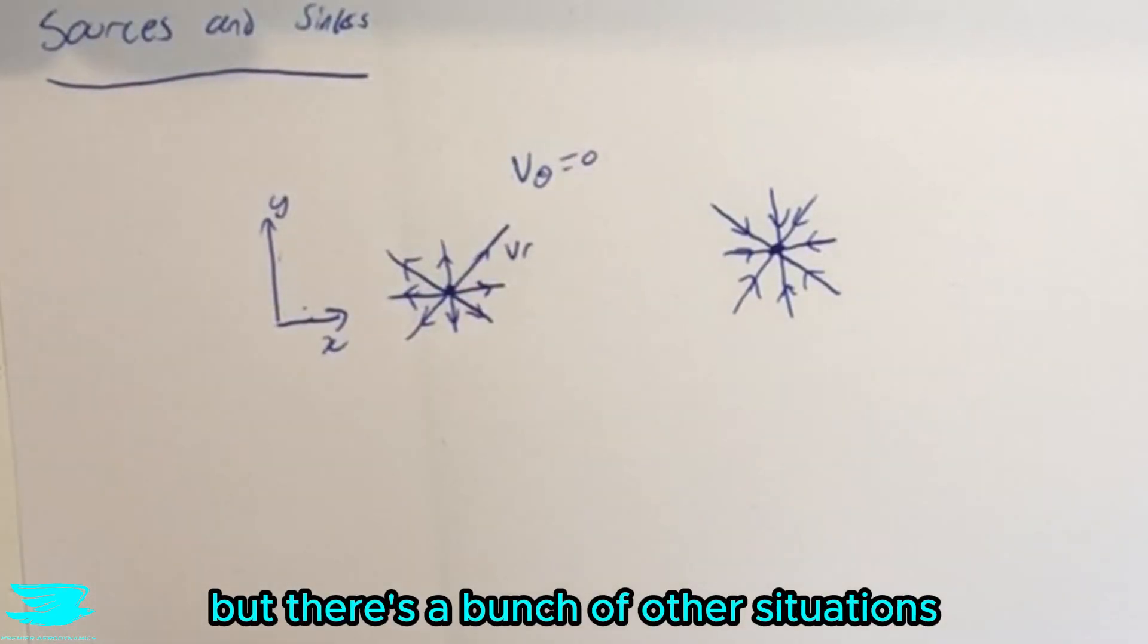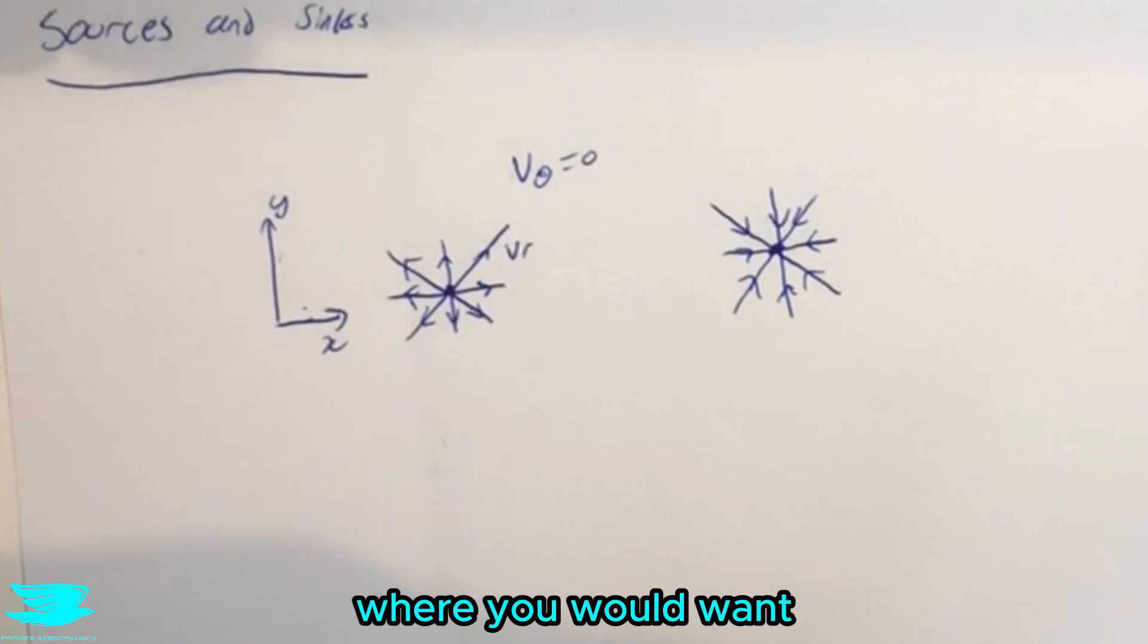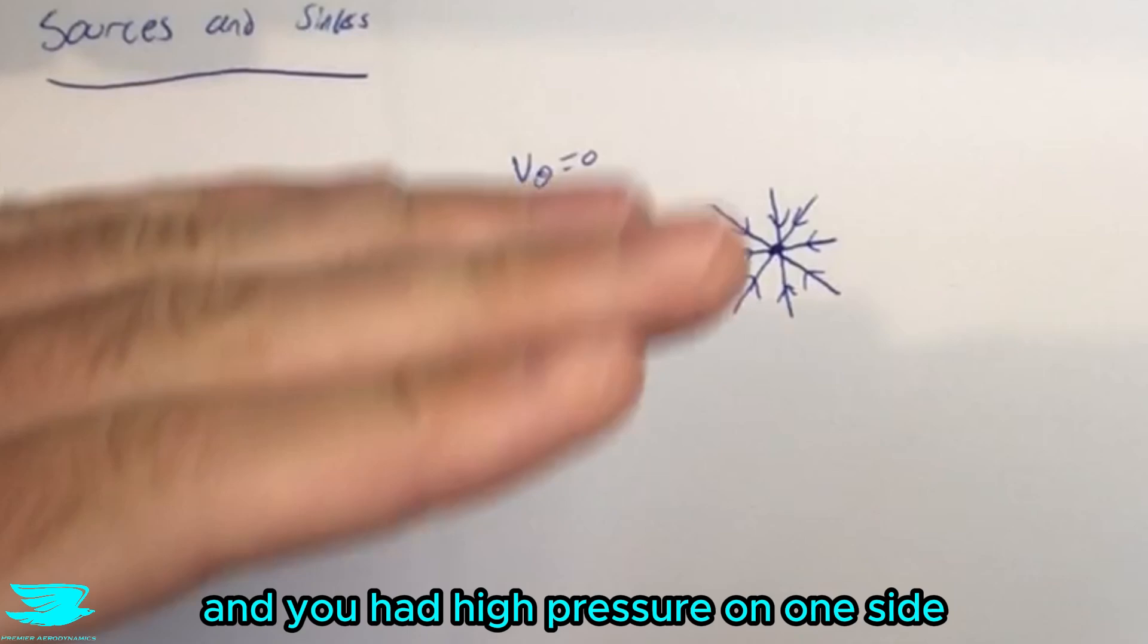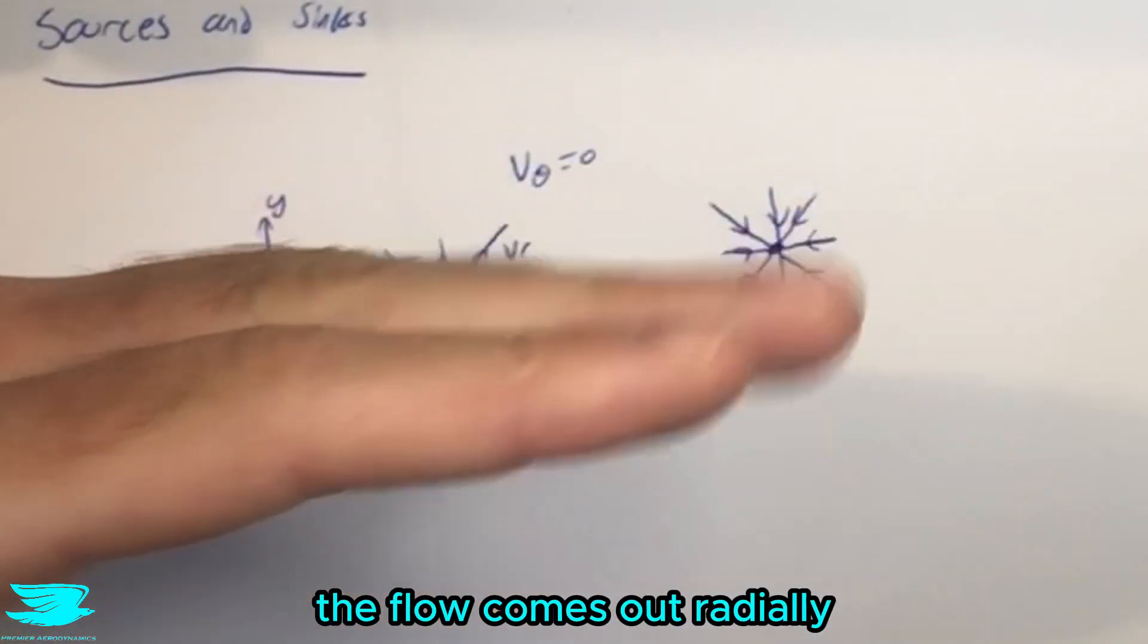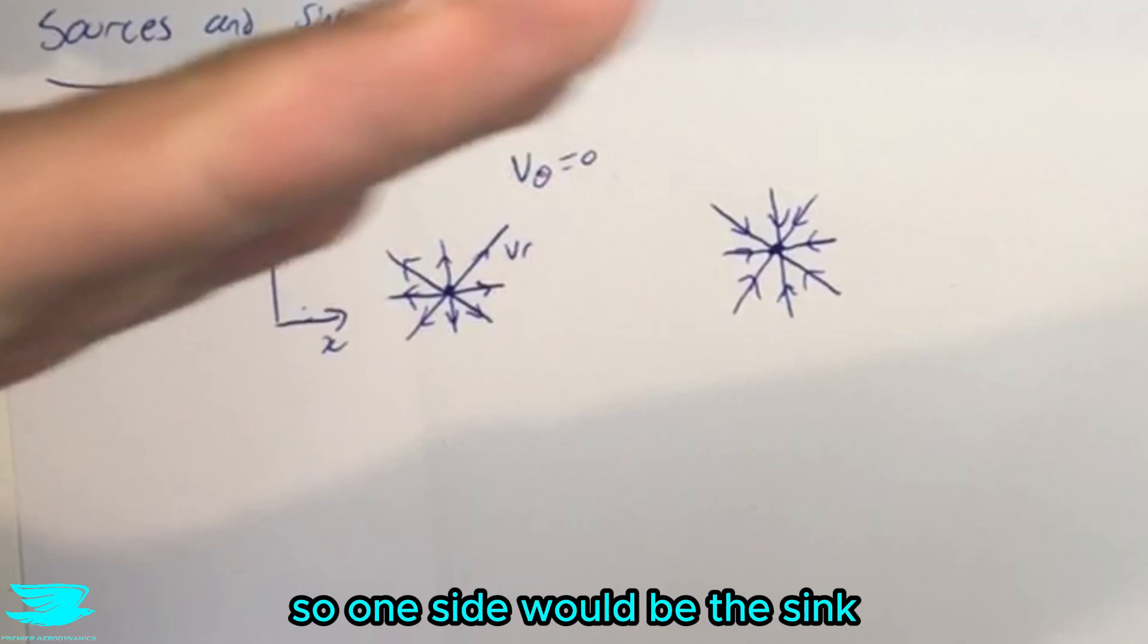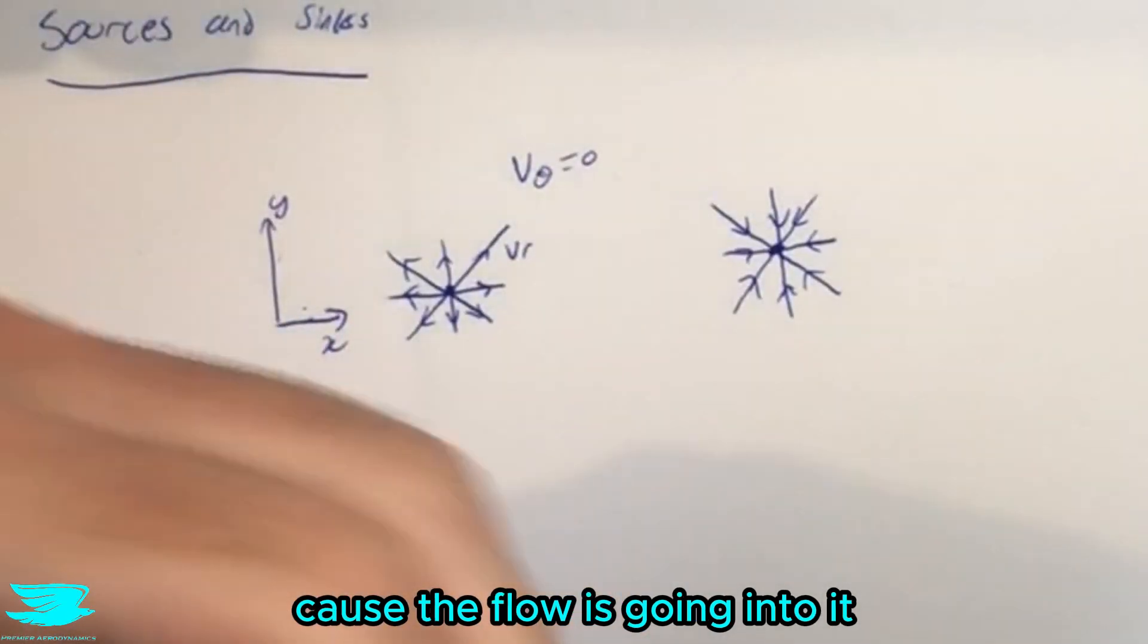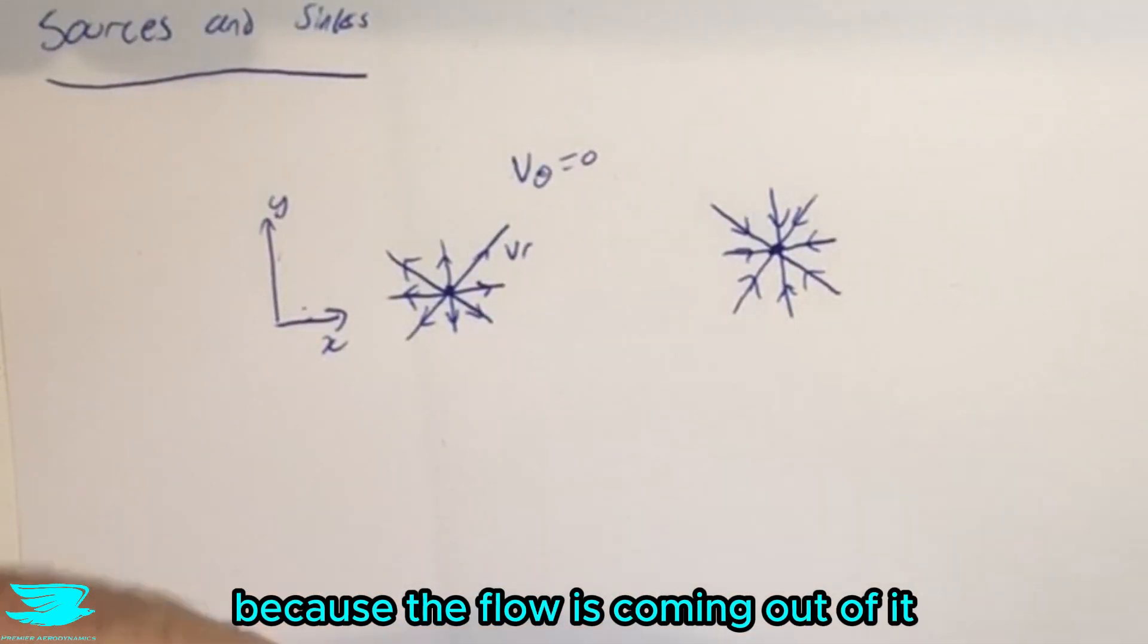But there is a bunch of other situations where you would want to put this into your potential flow or even CFD. For example, if you had a leak somewhere and you had high pressure on one side and then on the other side the flow comes out radially. So one side would be the sink because the flow is going into it, the other side is a source because the flow is coming out of it.